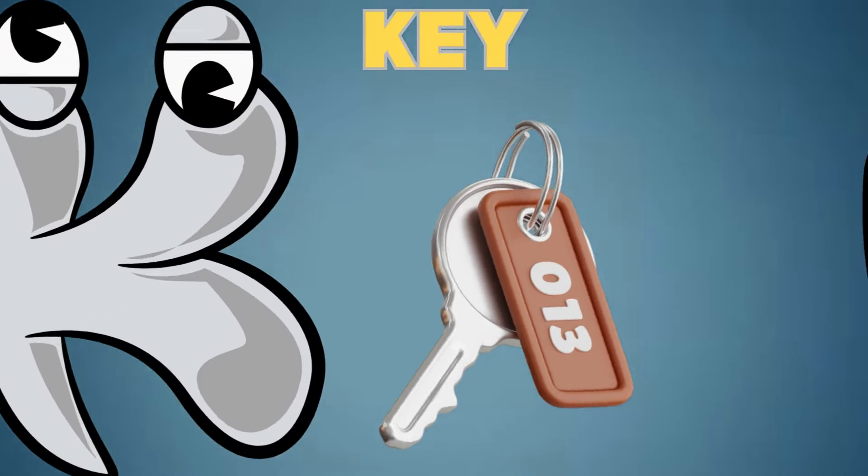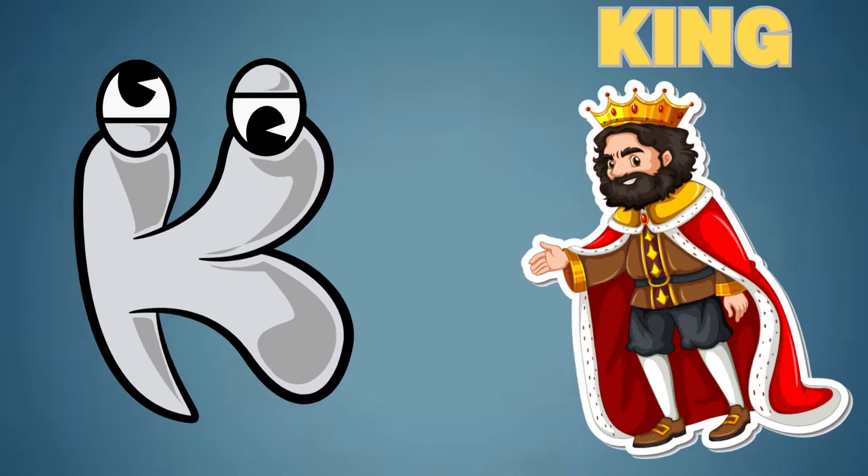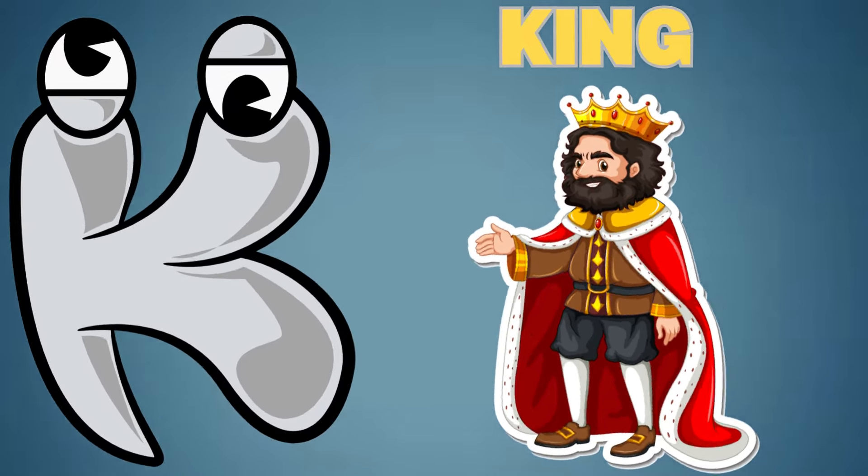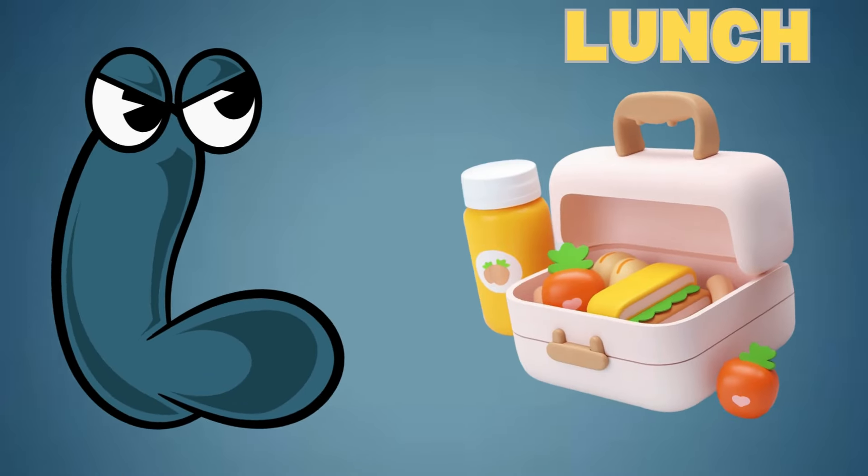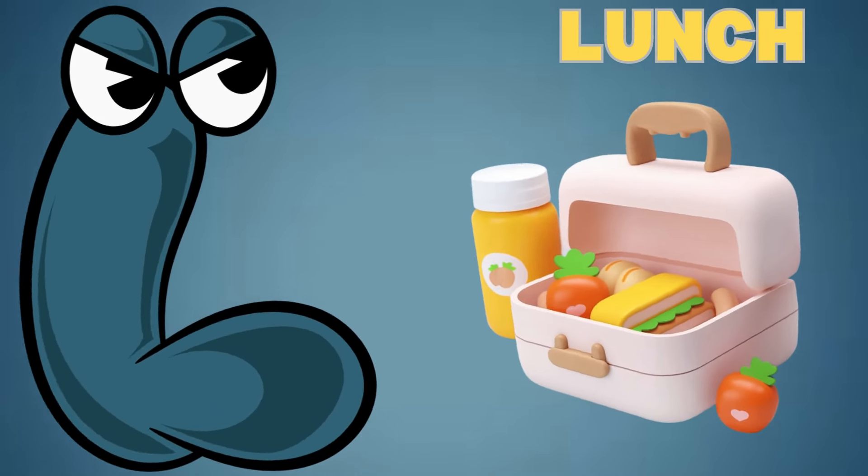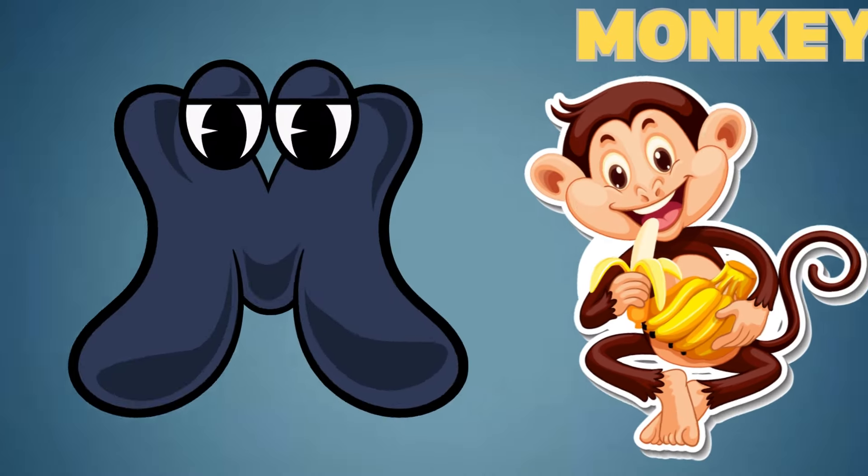K is for Key. K is for King. L is for Leaf. L is for Lunch.